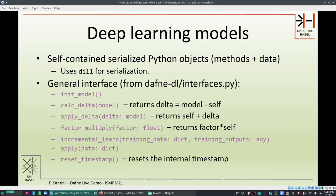The deep learning models provided with Daphne are self-contained serialized Python objects. Basically they are objects in which the methods and the data are both packaged in one single file, and this is done using the DL library for serialization. We will see in a moment how to actually define such an object and how to store it and how to handle it.